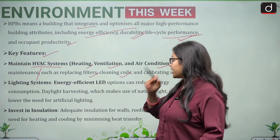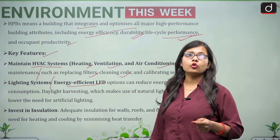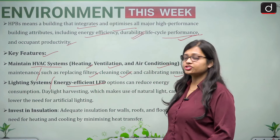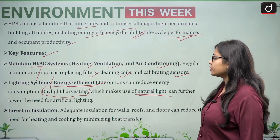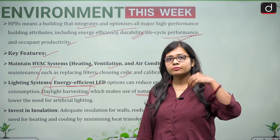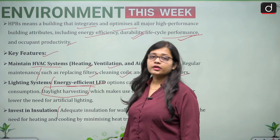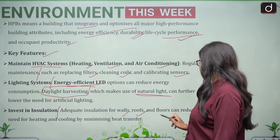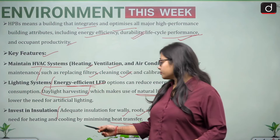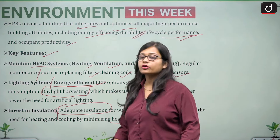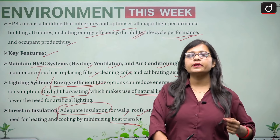Lighting systems are another key feature: energy-efficient LED options can reduce energy consumption compared to old tungsten bulbs. Daylight harvesting makes use of natural light, lowering the need for artificial lighting. Adequate insulation for walls, roofs, and floors reduces the need for heating and cooling by minimizing heat transfer.